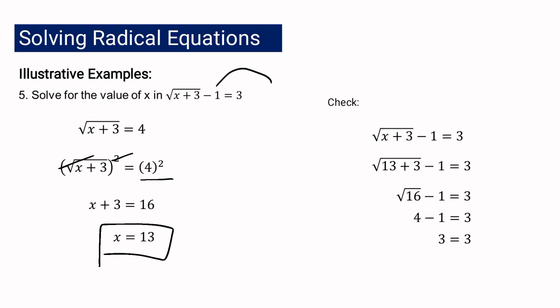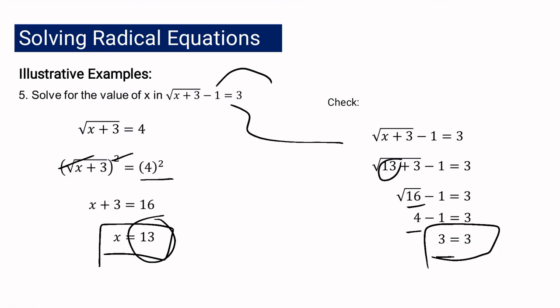By checking with the original equation, substituting x equals 13: 13 plus 3 is 16, the square root of 16 is 4, and 4 minus 1 is 3. Both sides equal 3, so x equals 13 is correct.